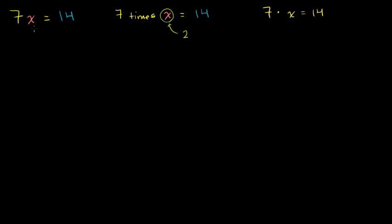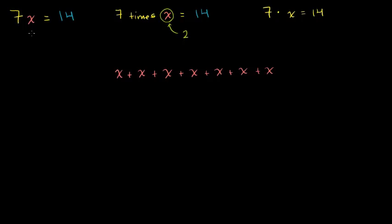Now, to understand how you can manipulate this equation to solve it, let's visualize this. 7 times x — that's x added to itself 7 times. That's the definition of multiplication. So it's literally x plus x plus x plus x plus x plus x plus x. That right there is 7x.